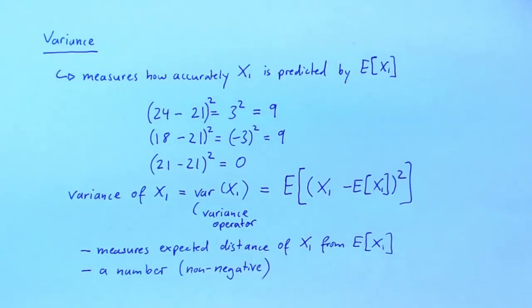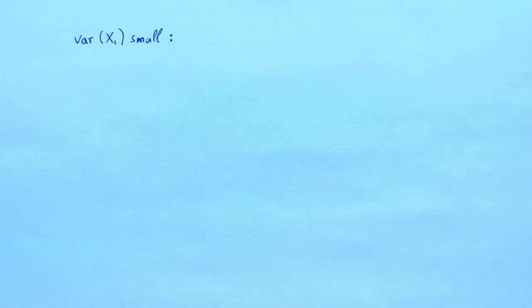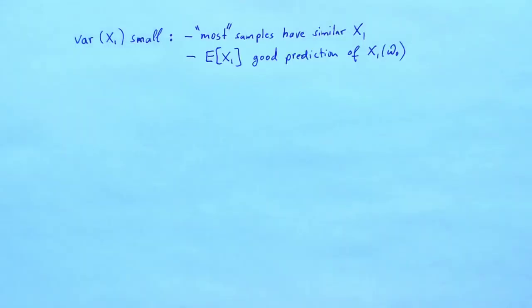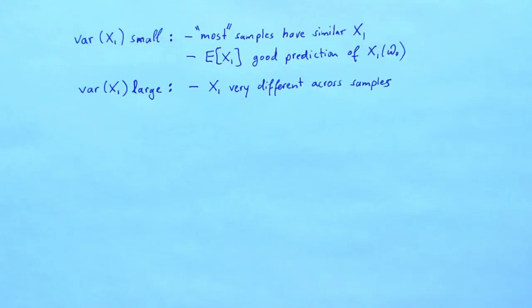So how do we interpret small or large values of a variance? A small variance of x1 means that for most samples we get similar values of x1 — most here meaning samples that we draw with large probability. In this scenario, it is sensible to represent x1 by one single number, its expectation, and the expectation will be a good predictor of the realization of x1. If the variance of x1 is large, then x1 takes on vastly different values for different samples. In this case, the expectation of x1 is not a good predictor of its realization.